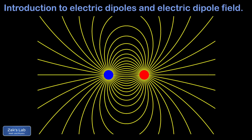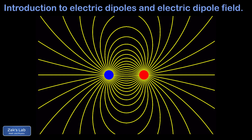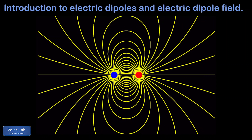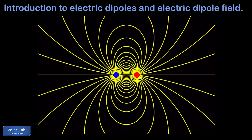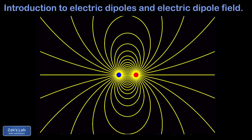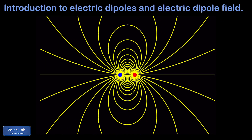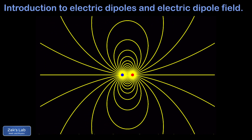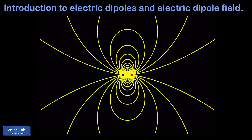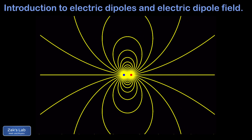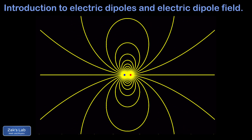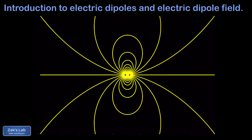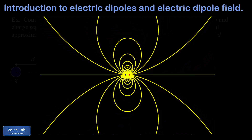The final qualitative point is that we often model the dipole as being very small — in other words, the charge separation distance is very small compared to the distance at which we're observing. As we zoom out of this picture, our field approaches what we might call the ideal dipole field, where the size of the dipole itself is considered infinitesimal, and the electric field around the dipole approaches a simpler form both mathematically and graphically.